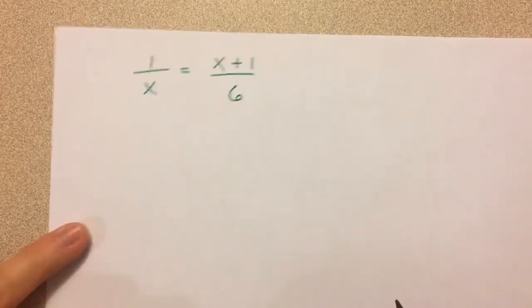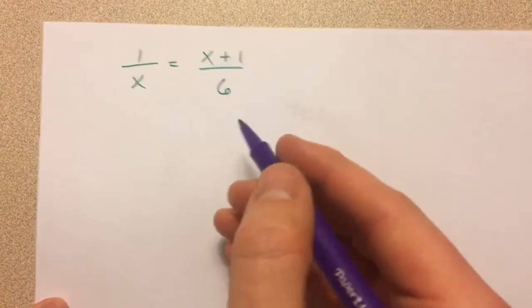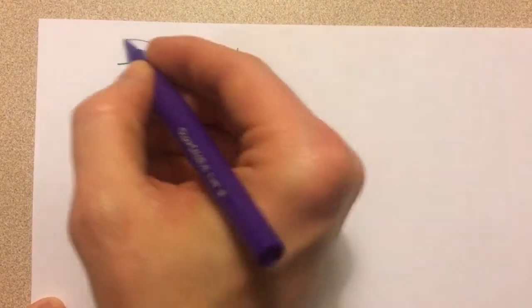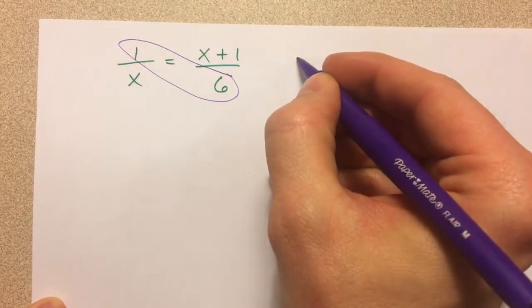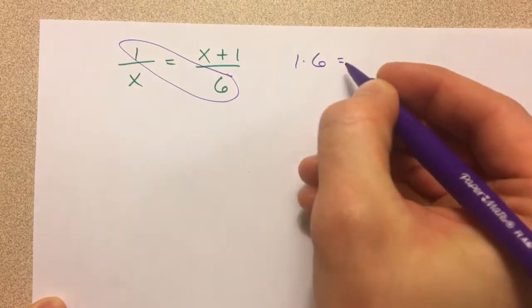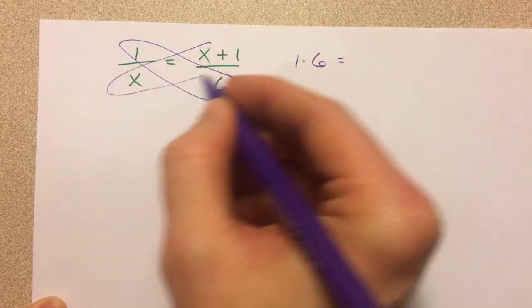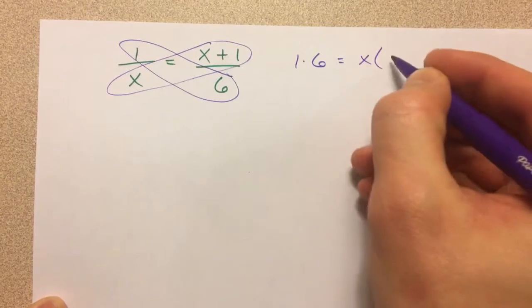Proportions. This time we're going to solve them and something different is going to happen. We've been talking about cross-multiplying, where we multiply the 1 times the 6, and we multiply the x times the x plus 1.